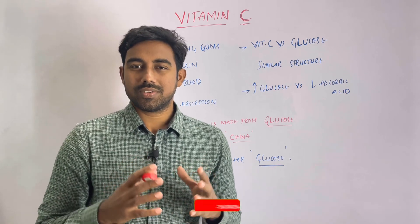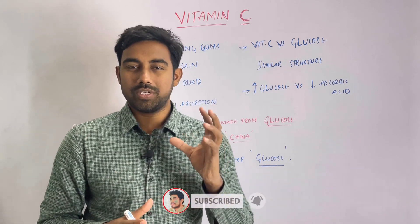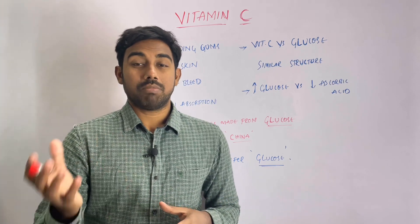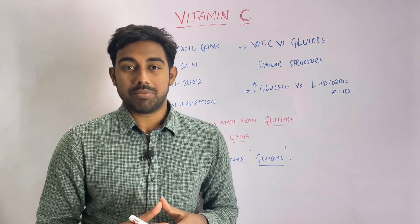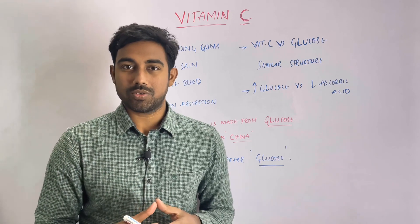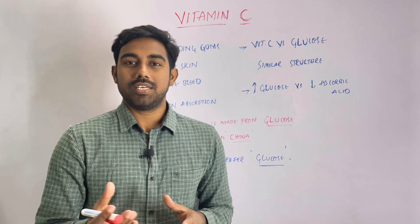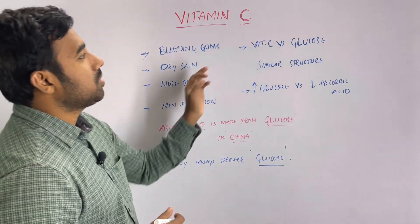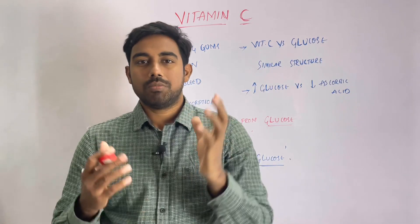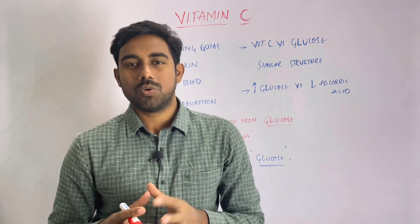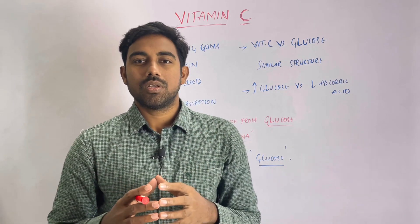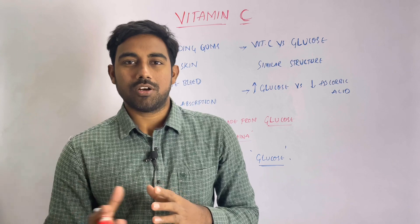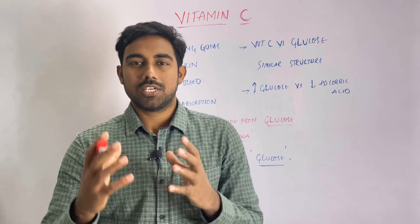What is the difference between ascorbic acid and vitamin C? What is the natural form of vitamin C? It is called ascorbic acid. But when we add it in capsules or tablets, we also call it ascorbic acid — that is the difference in naming. Ascorbic acid and vitamin C are essentially the same; these two structures are similar.